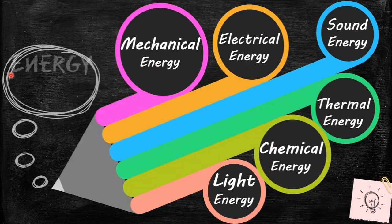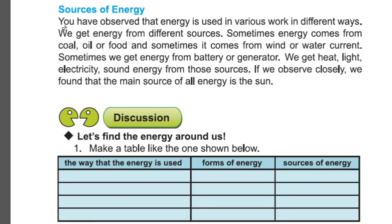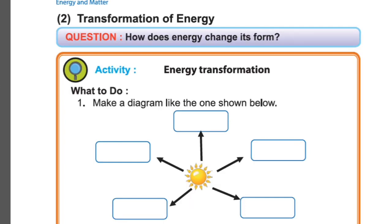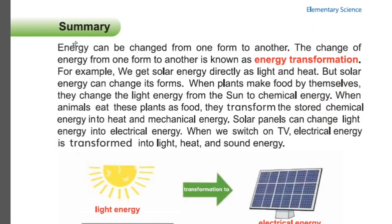Now dear students, go to page 31 — Sources of Energy. You have observed that energy is used in various work in different ways. We get energy from different sources. Sometimes energy comes from coal, oil, or food, and sometimes it comes from wind or water current. Sometimes we get energy from a battery or generator. We get heat, light, electricity, and sound energy from those sources. If we observe closely, we find that the main source of all energy is the sun.